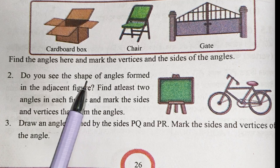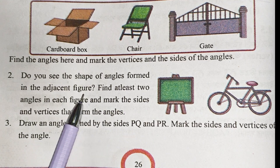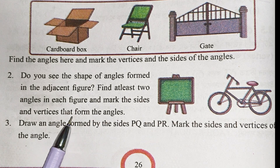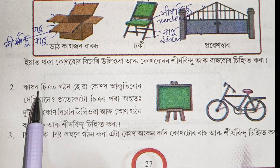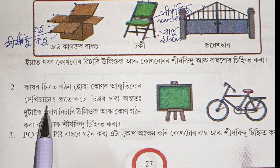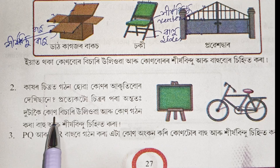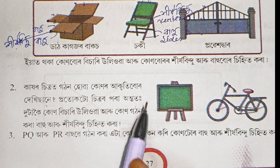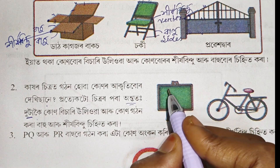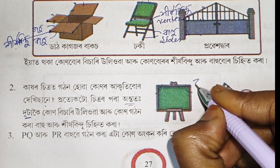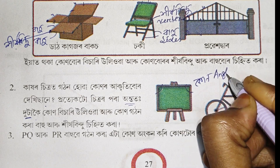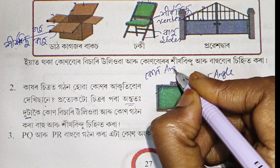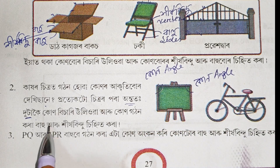Do you see the shape of angles formed in the adjacent figure? Find at least two angles in each figure and mark the sides and vertices that form the angles. Do you see the shape of angles in each figure?